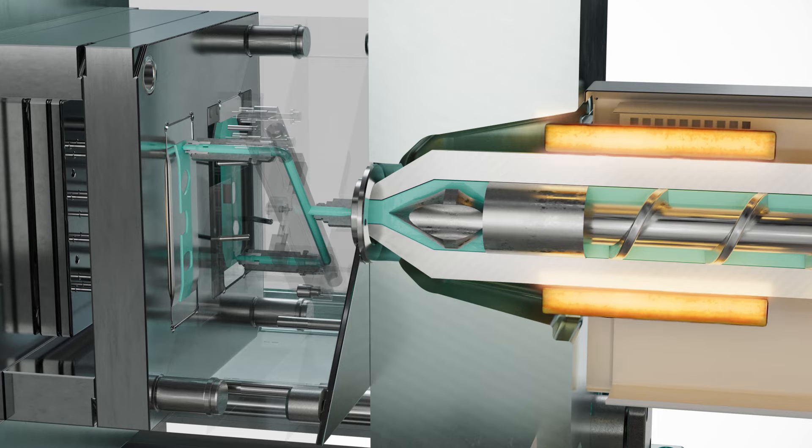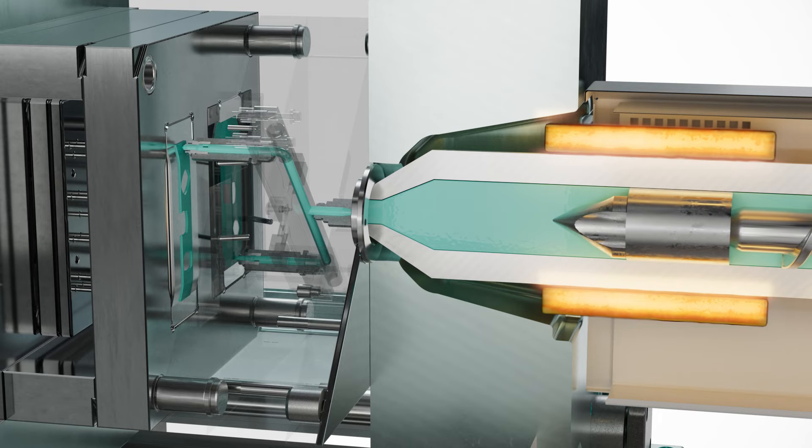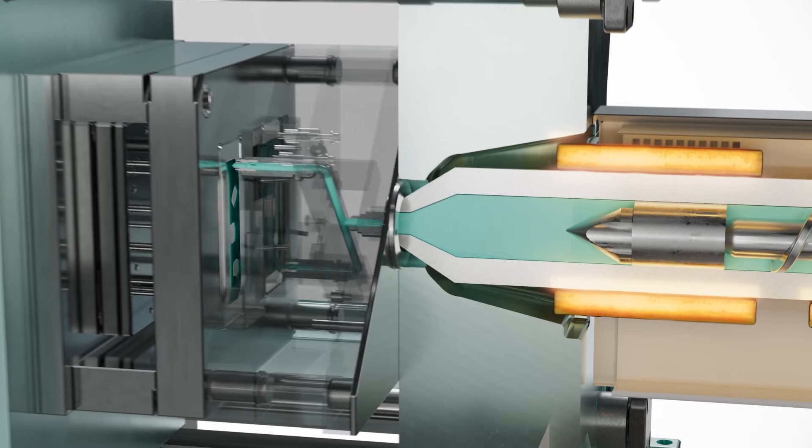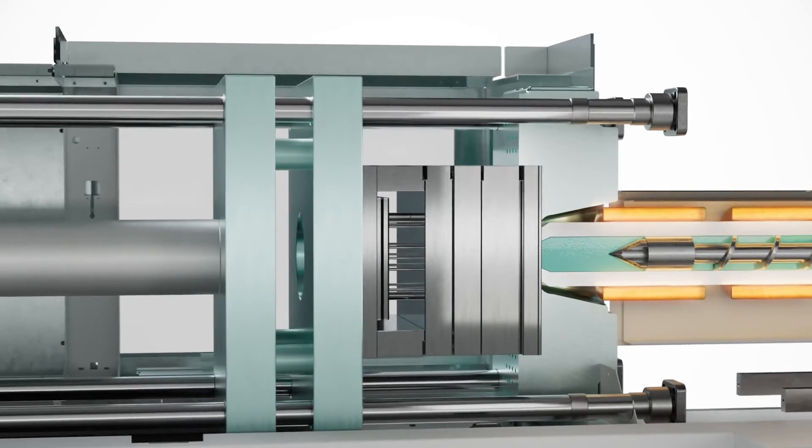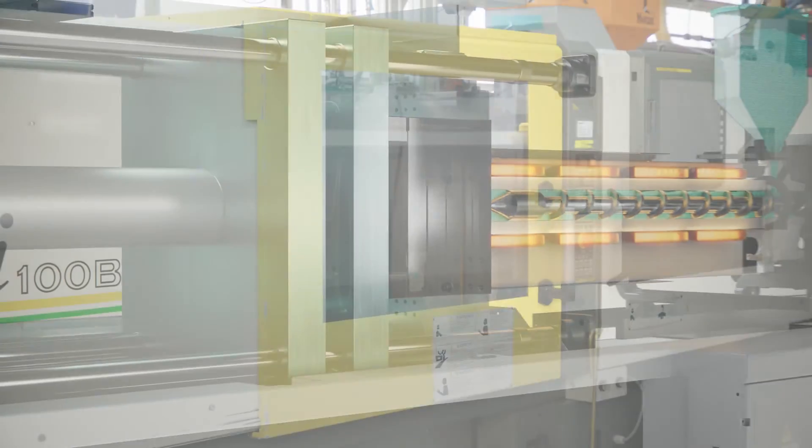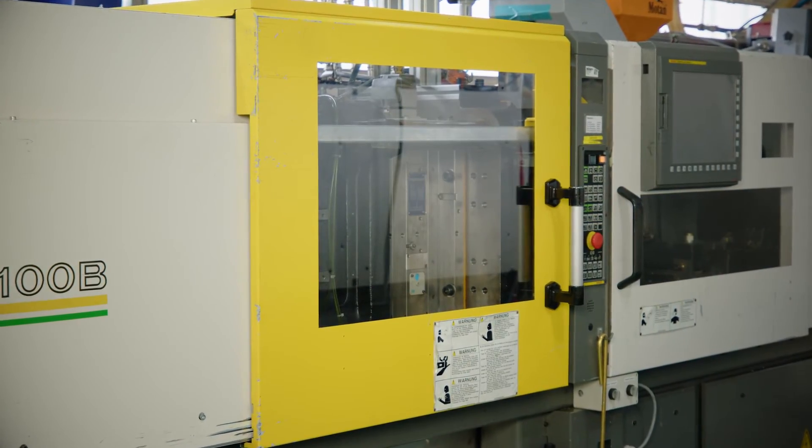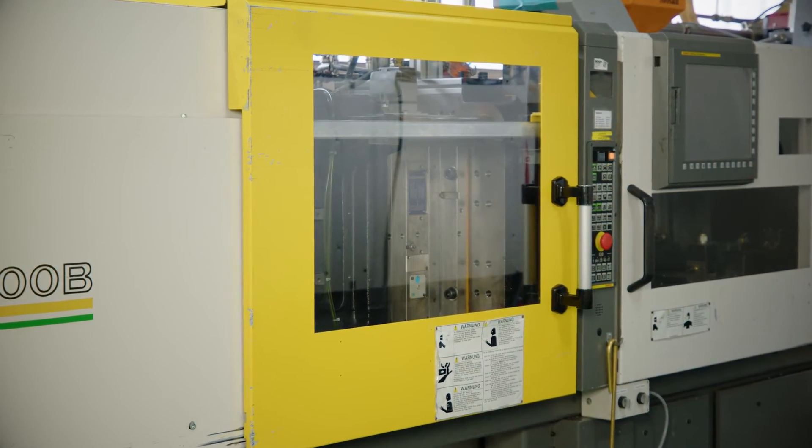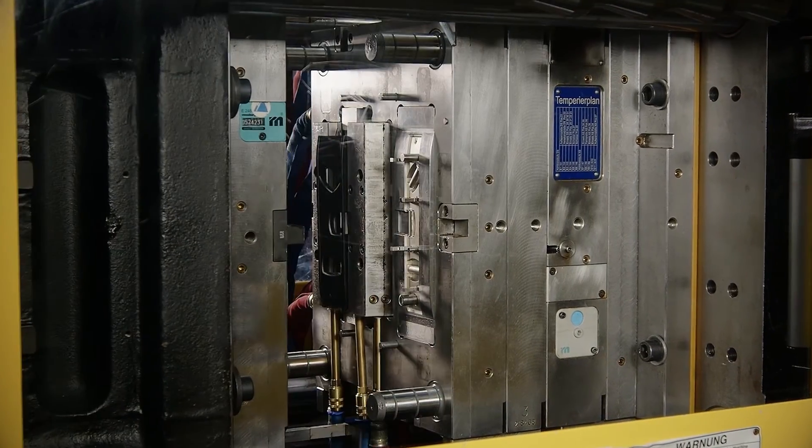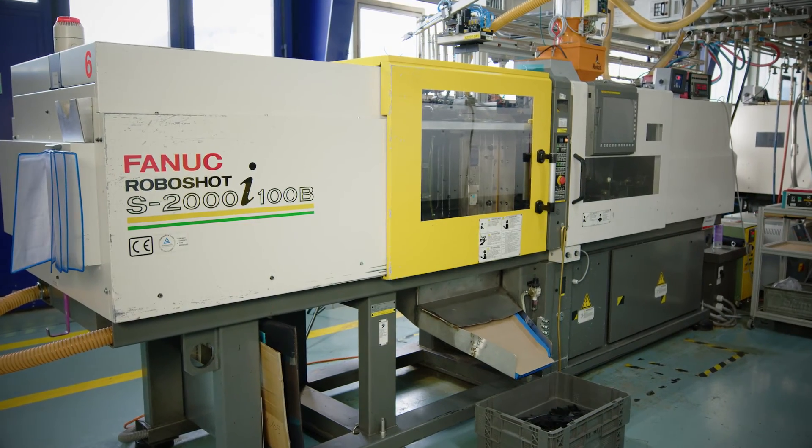While the molded part cools down, the mold remains closed. Due to the cooling channels, the mold reaches a temperature of 30 degrees Celsius in approximately 13 seconds. Then both mold halves open and the parts of the spirit level are ejected.